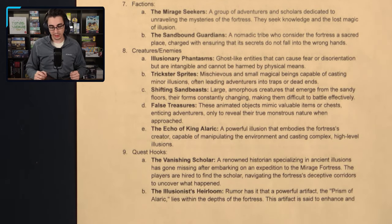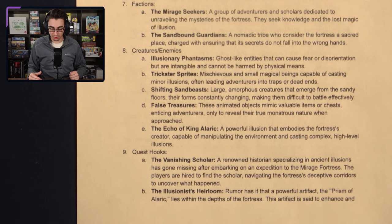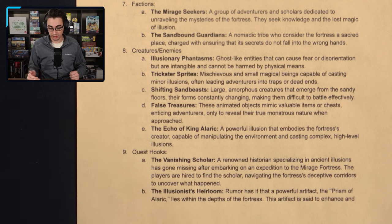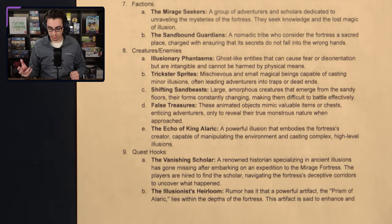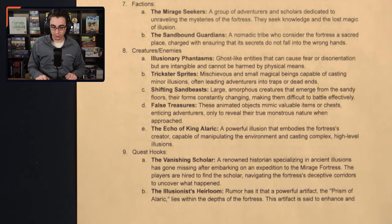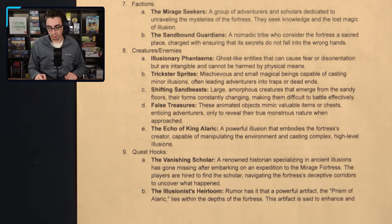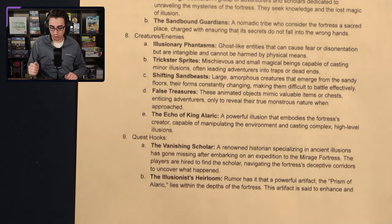Creatures you might encounter include Illusionary Phantasms — ghost-like entities that cause fear or disorientation but are intangible and cannot be harmed physically. Trickster Sprites are mischievous small magical beings capable of casting minor illusions to lead adventurers into traps or dead ends. Shifting Sandbeasts are large amorphous creatures emerging from the sandy floors, their forms constantly changing. False Treasures are animated objects mimicking valuable items, revealing their true monstrous nature when approached. Finally, the Echo of King Alaric is a powerful illusion embodying the fortress creator, capable of manipulating the environment and casting complex high-level illusions.